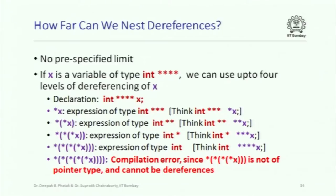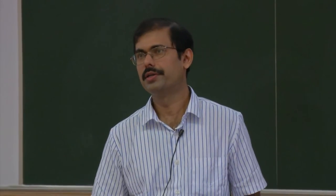We can certainly nest dereferences. If X is of type int****, then *x, **x, ***x, and ****x are all legitimate expressions. But if you put five stars, that is not legitimate — dereferencing X four times gives an integer, and applying star to an integer is invalid because an integer is not a pointer.